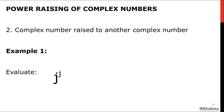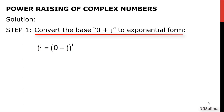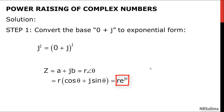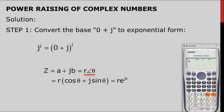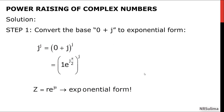For example, evaluate j raised to the power of j. Step 1: convert the base j, or 0 plus j, to exponential form. The exponential form of a complex number is r times exponential j theta, where theta is in radians. The easiest way to find r and theta is to convert 0 plus j to polar with the calculator in radian mode: shift, setup, press 4, then convert 0 plus i to polar, shift to 3. The answer is 1 angle pi halves, where r equals 1 and theta in radians equals pi halves. So we write 0 plus j in exponential form as 1 exponential j pi halves.